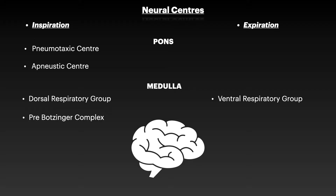The neural centers concerned with respiration can be broadly classified based on whether they are related to inspiration or expiration, and whether they inhibit or prolong these phases. The pneumotaxic center of the upper pons and the apneustic center of the lower pons are concerned with inspiration. In the medulla, the dorsal respiratory group (DRG) and the pre-Bötzinger complex — the pacemaker of the respiratory system — are also concerned with inspiration. The ventral respiratory group (VRG) is concerned with expiration. Expiration at rest is a passive process, so a large group of neurons is not required; VRG is only active during forceful expiration, such as during exercise.